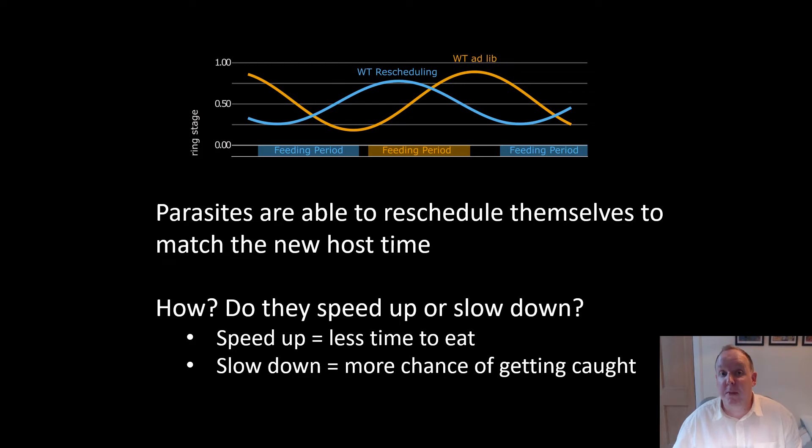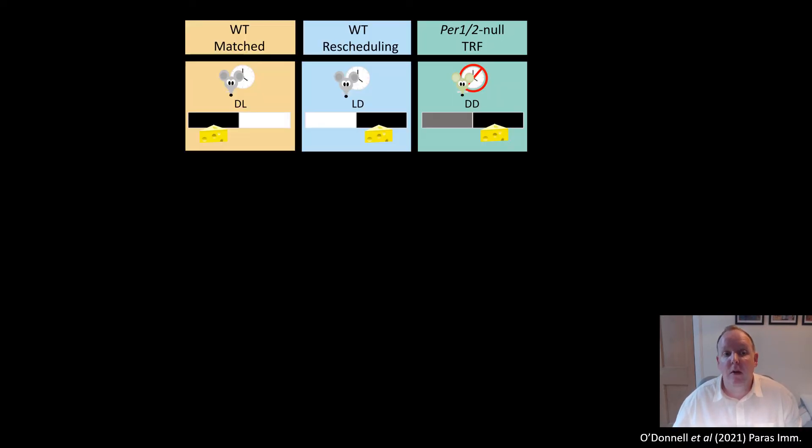Parasites could choose to speed up their development, but this gives them less time to eat and less time to prepare the red blood cell as a home. Or they could slow down their development, which may be risky as the immune system might catch them. Of course, they could do a combination of both, or simply arrest themselves to get back on time in one cycle. So we designed an experiment to figure this out.